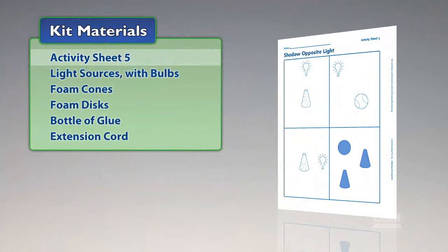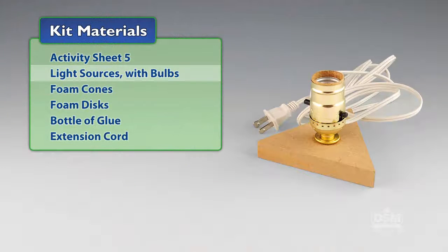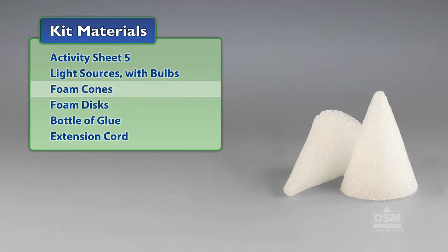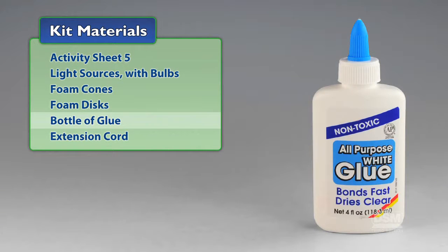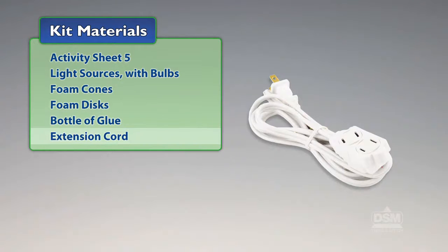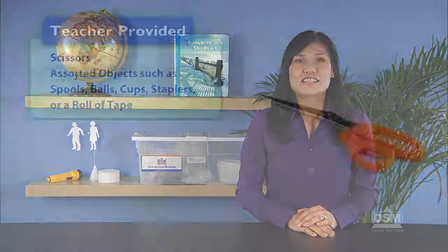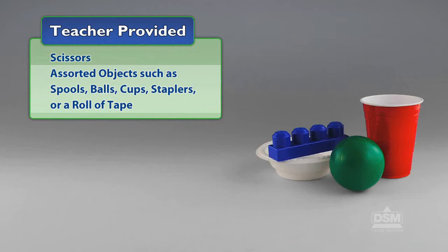You will need the following materials from the kit: Activity Sheet 5, light sources with bulbs, foam cones, foam discs, bottle of glue, and an extension cord. You will also need to provide scissors and assorted objects such as spools, balls, cups, staplers, or a roll of tape.